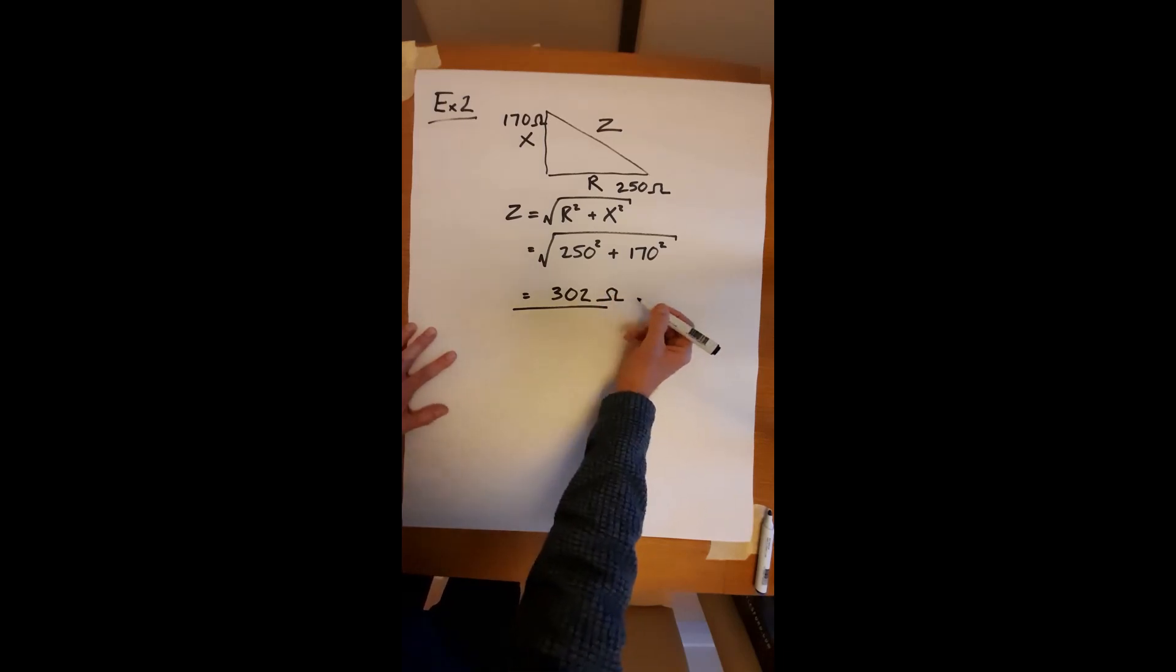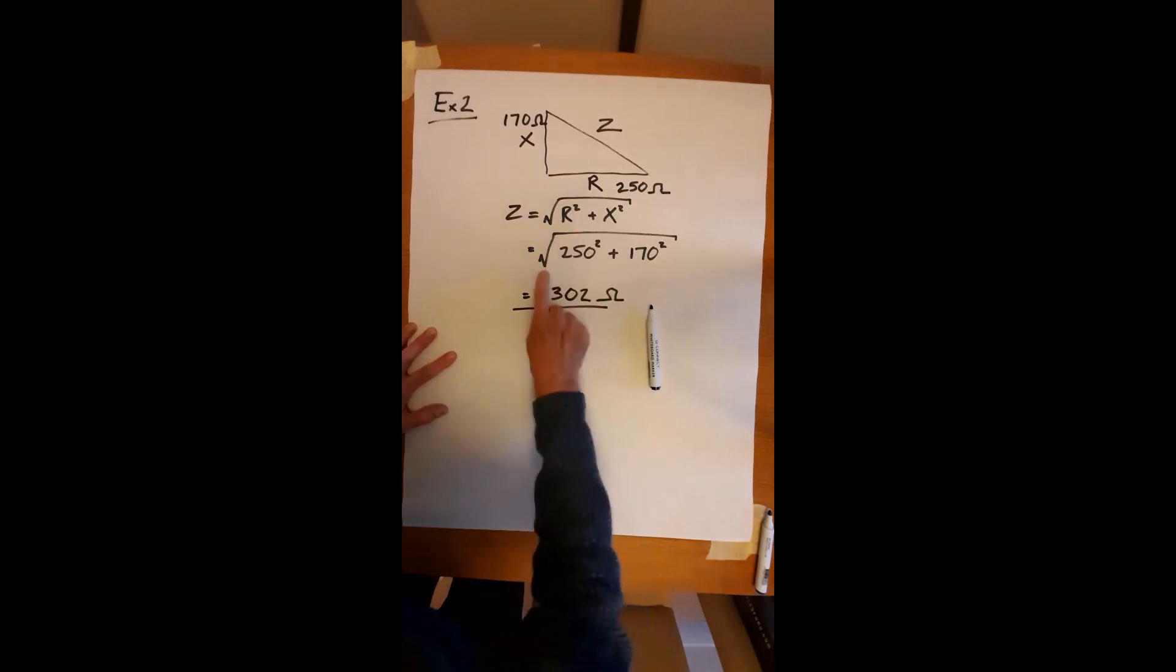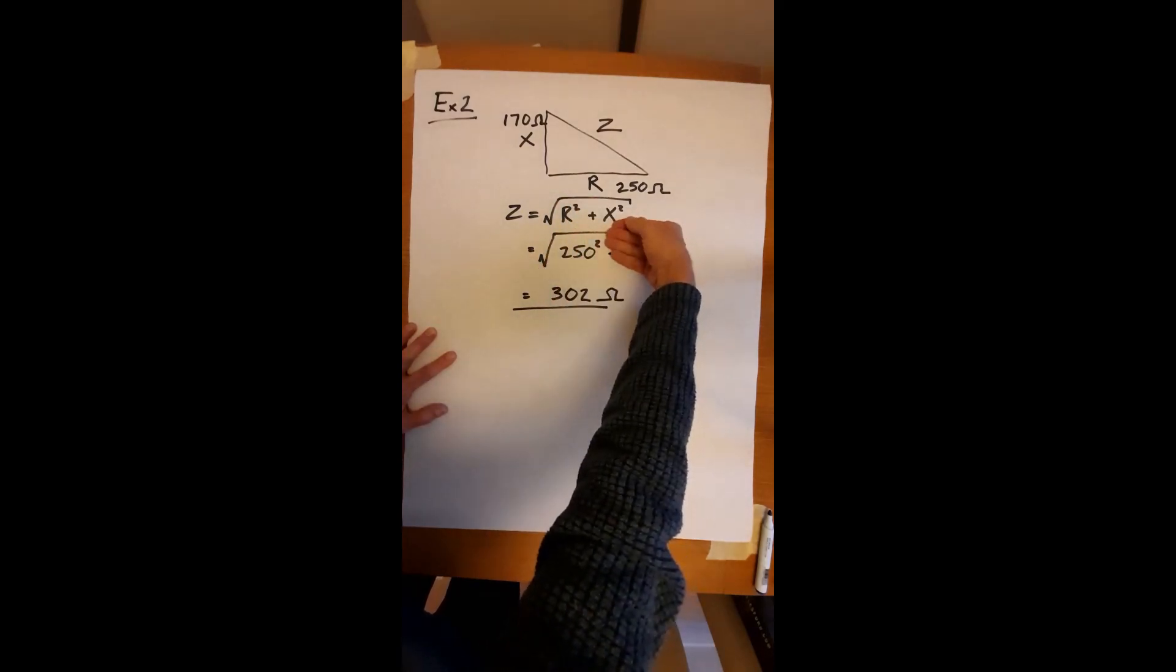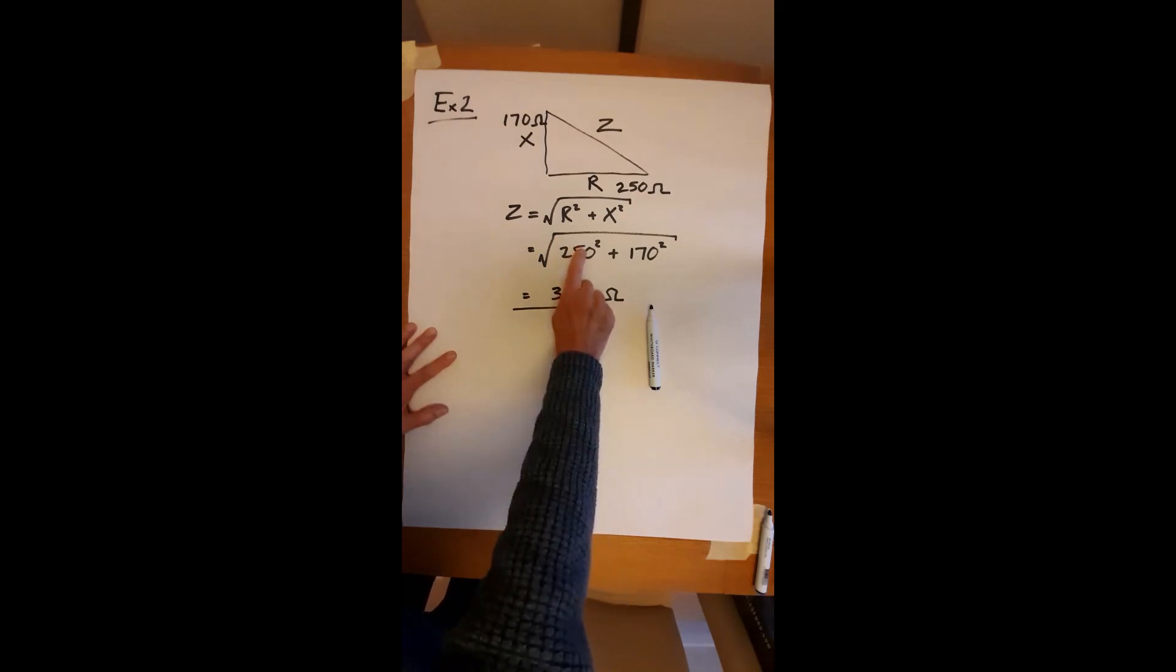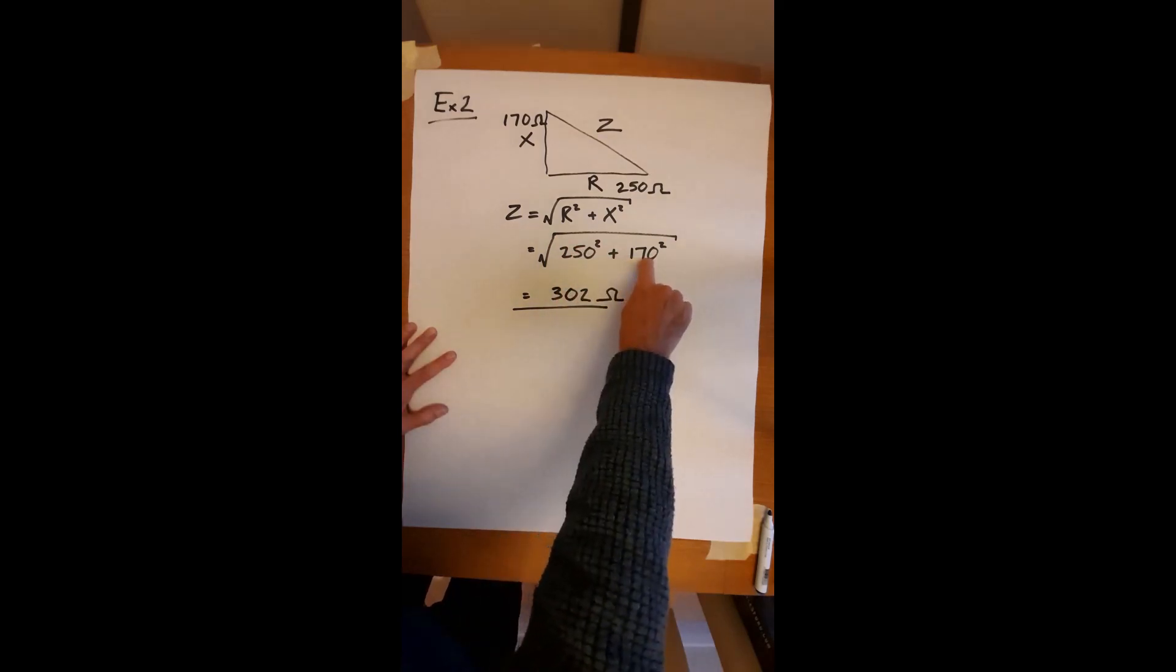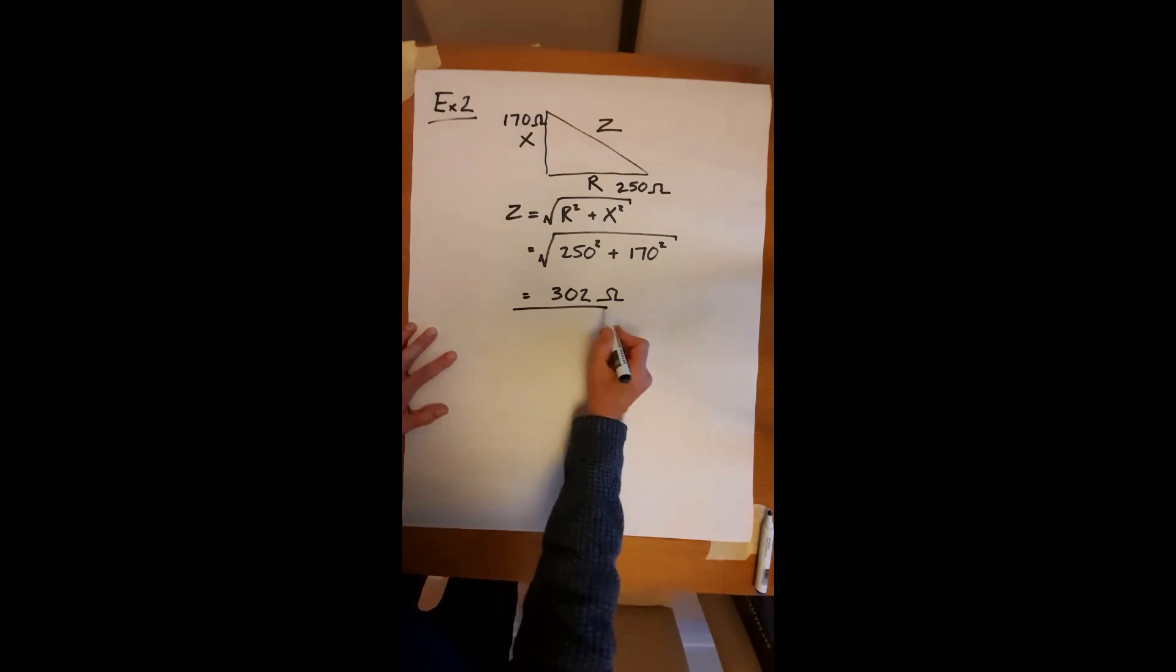Okay. If you make mistakes with your calculator, the most common problem occurs in just taking the square root of the first bit. So you end up with a square root of 250 squared and add on the second number. This is a calculator error. You need to be careful entering your details in there. Okay, so hopefully that makes sense.